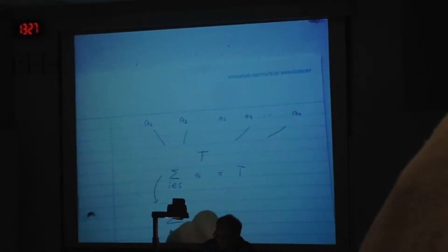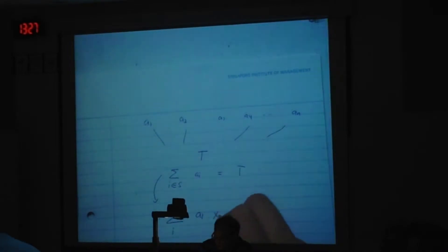Actually, rather than saying I subset S, I can rewrite this one like this. This is actually sigma for all I, A_I times X_I should be T, where X_I is either 0 or 1.